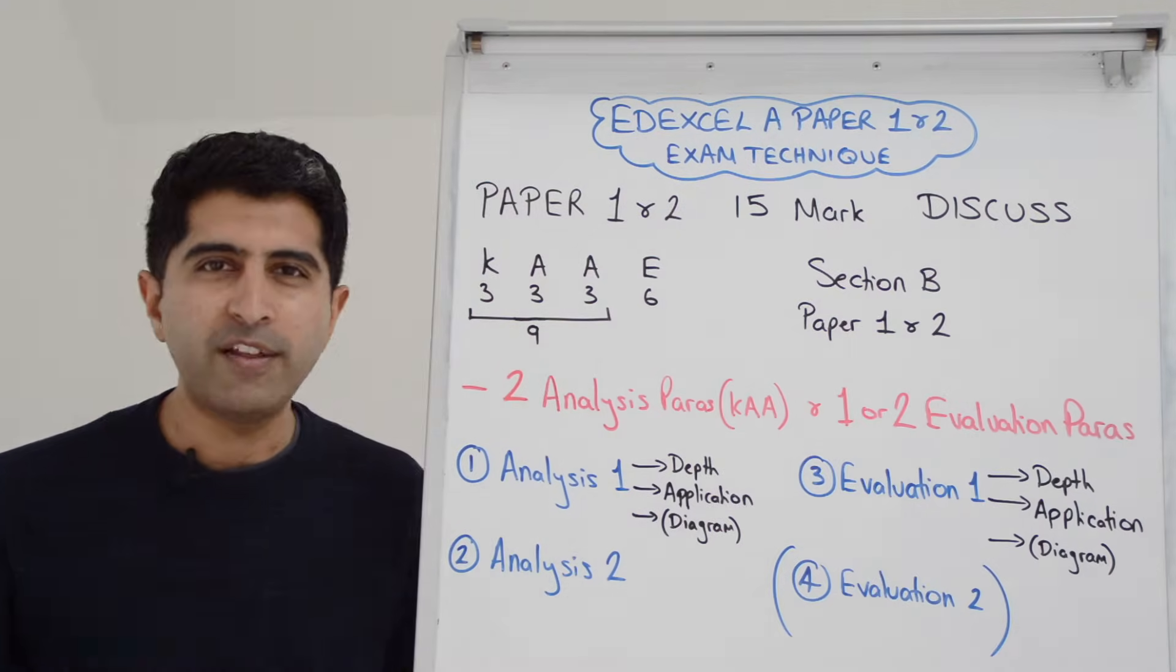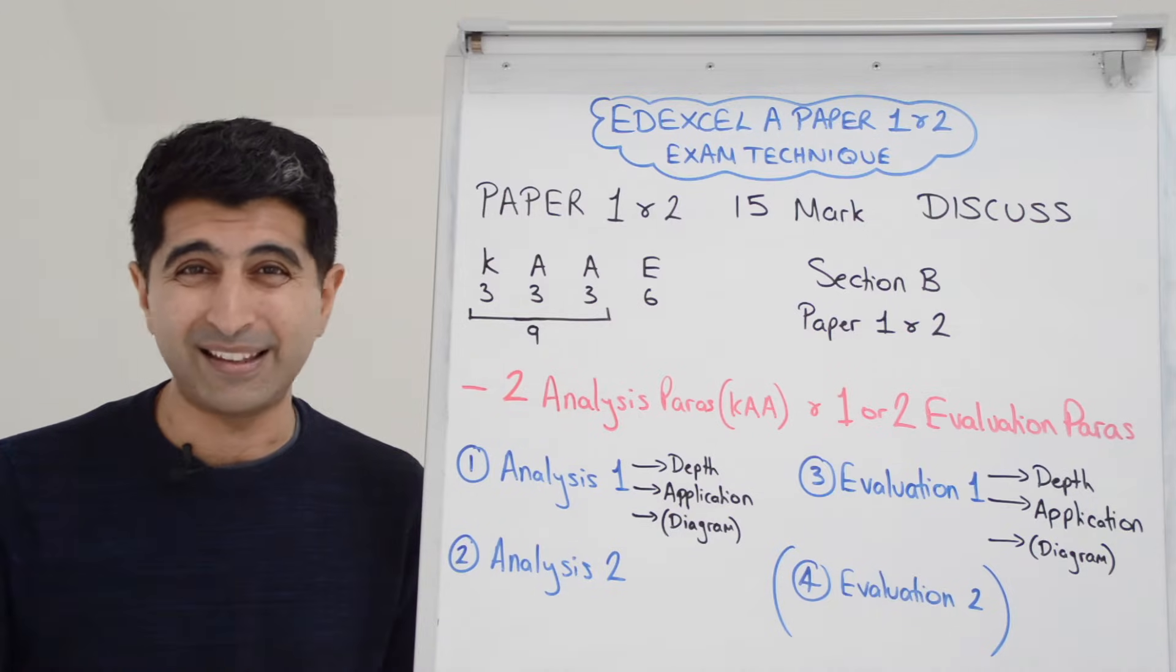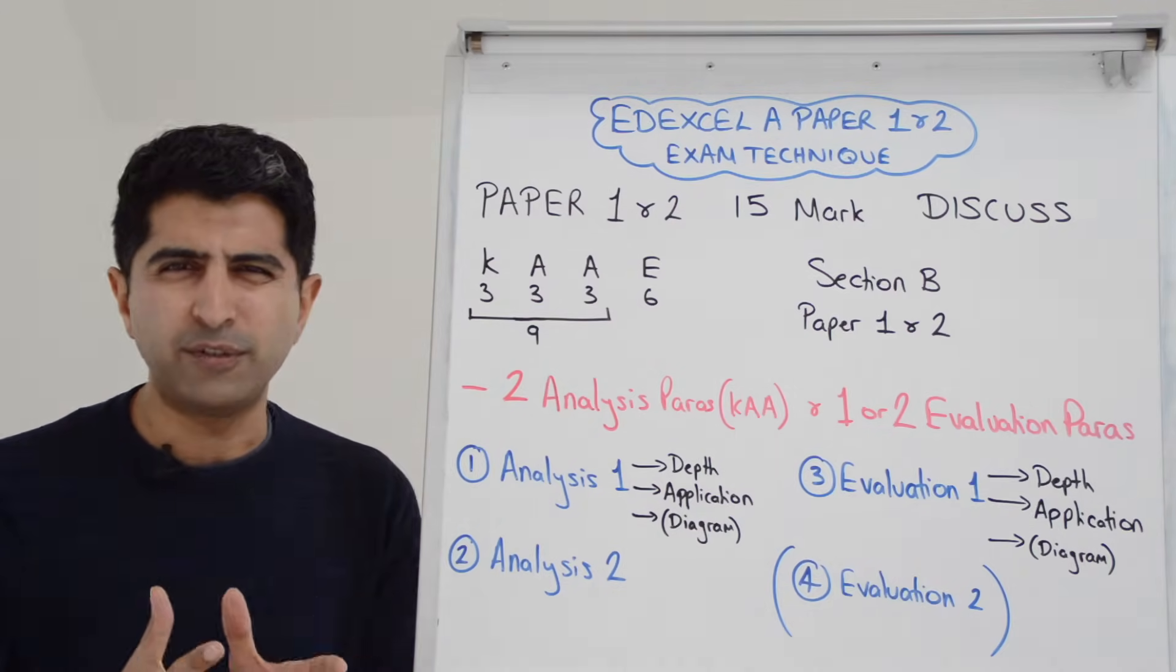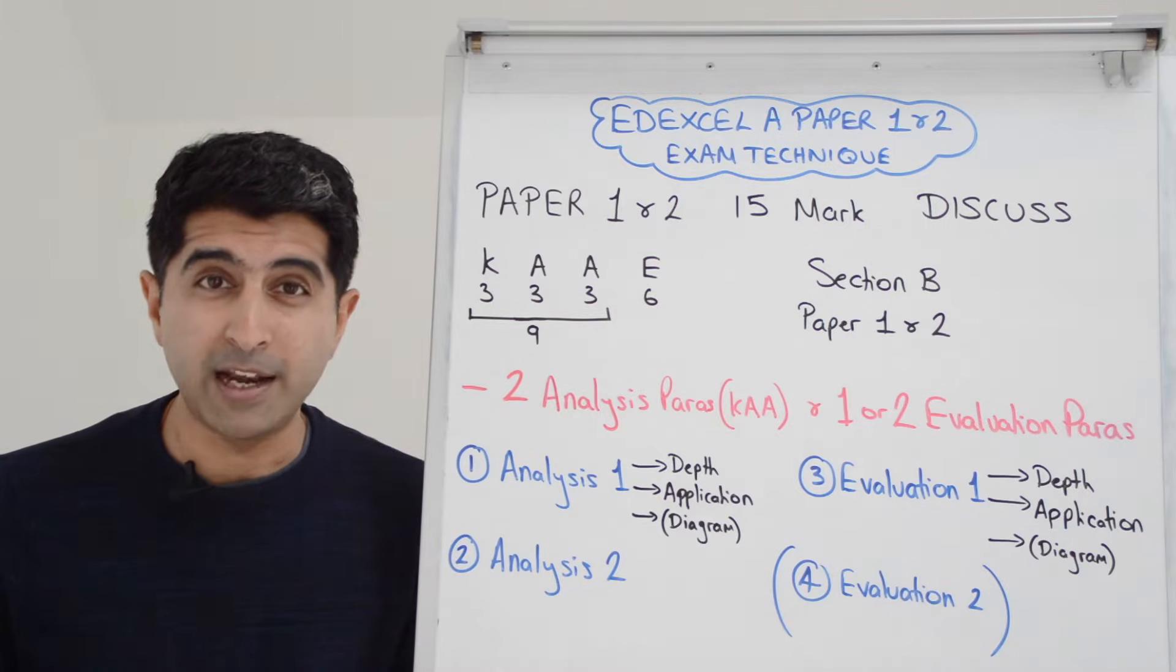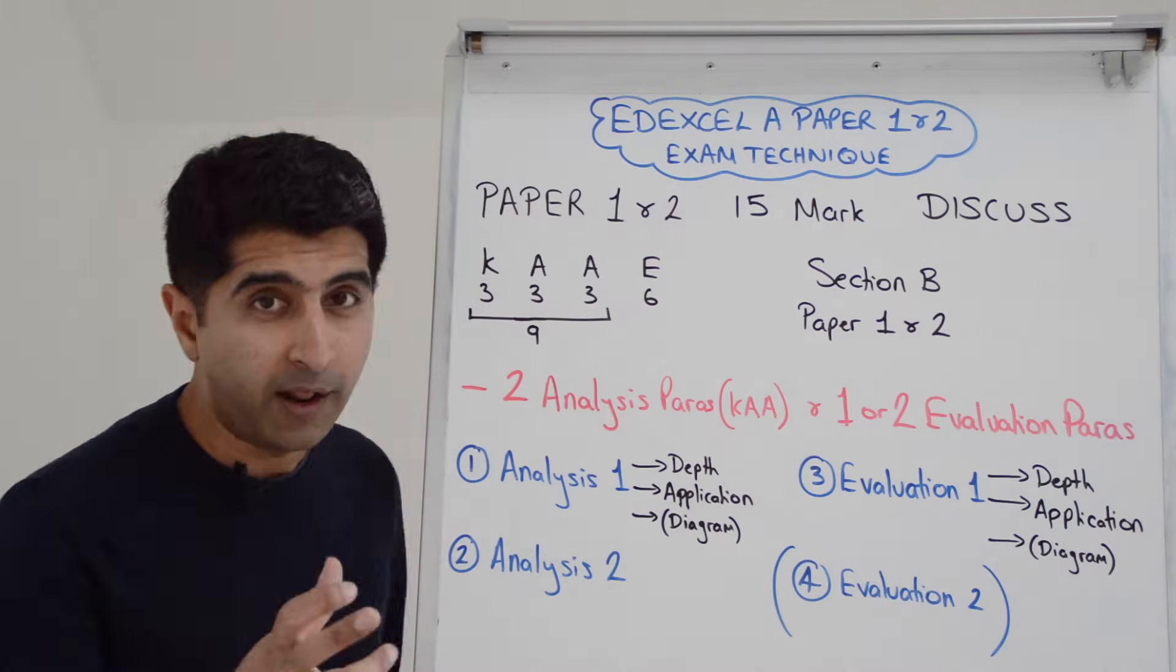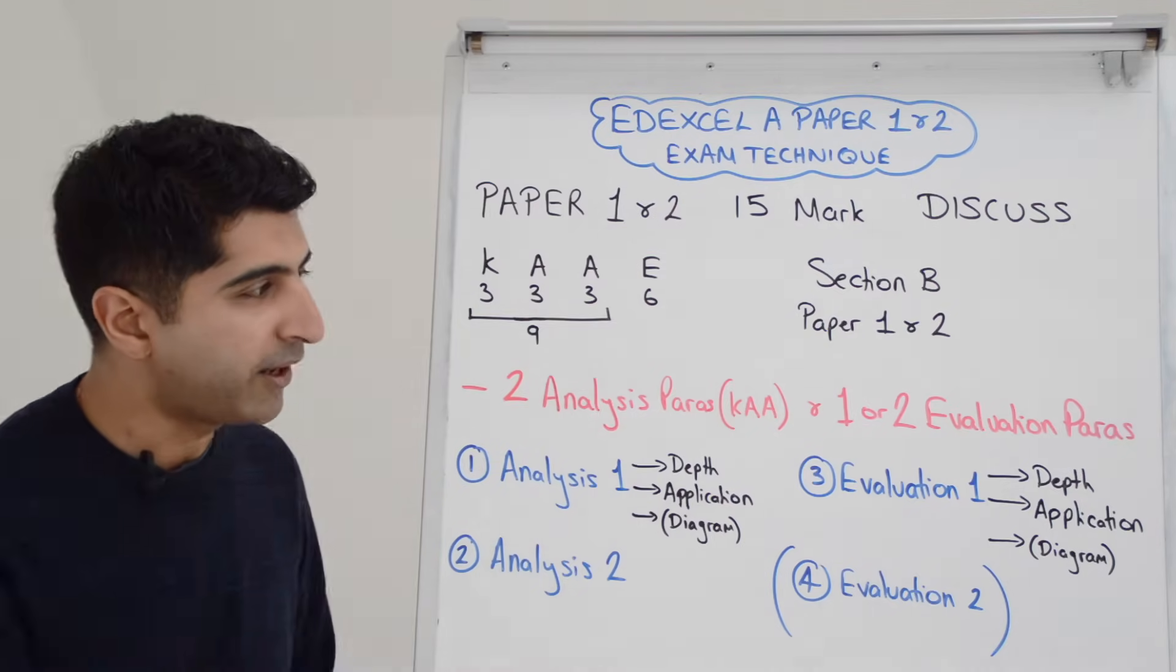You need to work it out. If you've written one evaluation paragraph, and in your mind it is incredible detail, there are so many links in that paragraph, so many different ways of developing it that you put down, then you can trust that's going to be enough. It's depth. Even one detailed paragraph can get you six marks. Detail matters, not the number of points.